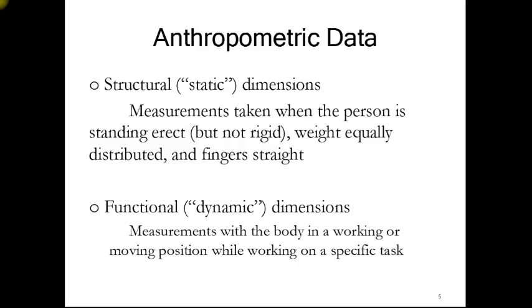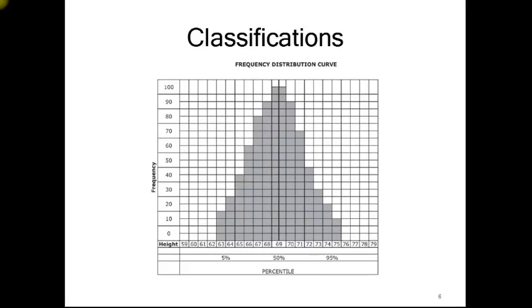It's important that interior designers consider the body sizes of those using a space. We're going to look at several different classifications: the average of the U.S. population. On the low side is the 5th percentile, on the high side is the 95th percentile, and in the middle is the 50th percentile. While it may seem that 95% of 100 would be great to have, that's not serving 95% of the population — it's serving a very small area.